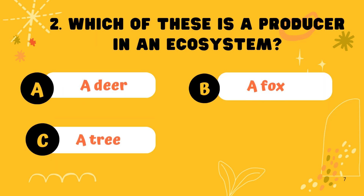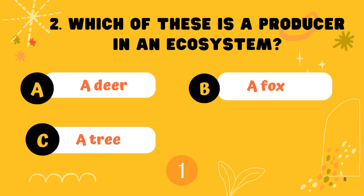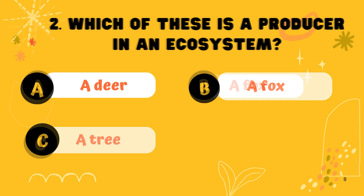Question 2. Which of these is a producer in an ecosystem? Option C: A tree.